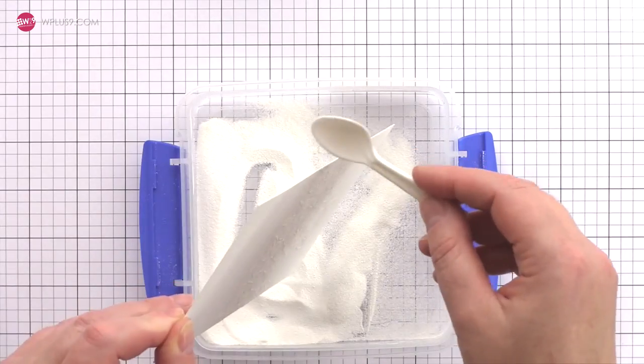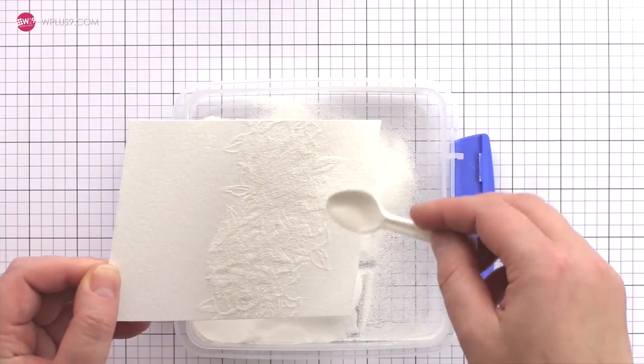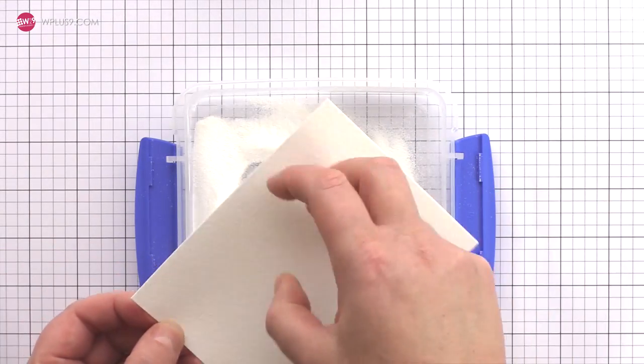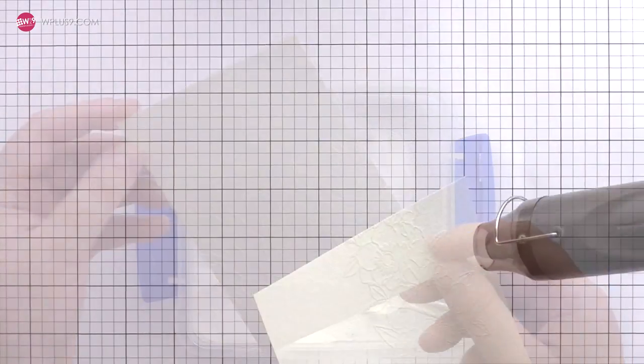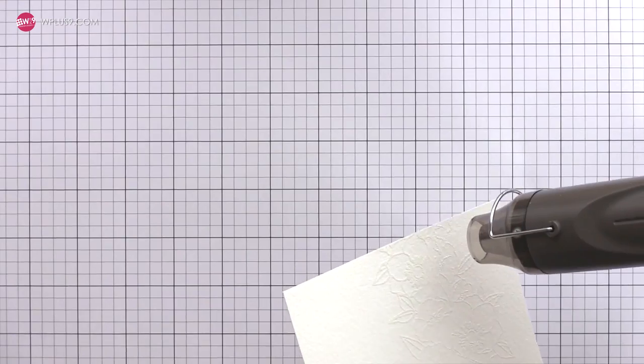You really can't see the embossing ink in the video but once you sprinkle on embossing powder it adheres to the sticky ink and the image appears. I gave it a good tap on the back to remove any excess embossing powder and then I brought it to my heat tool to melt the powder.